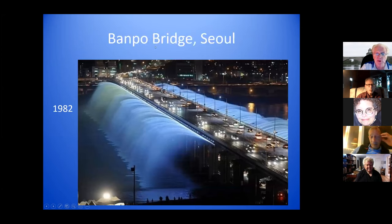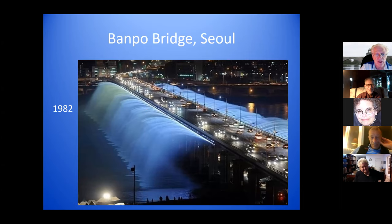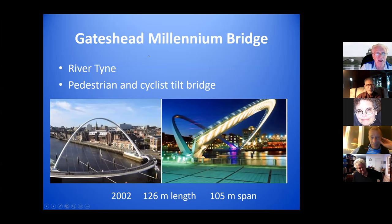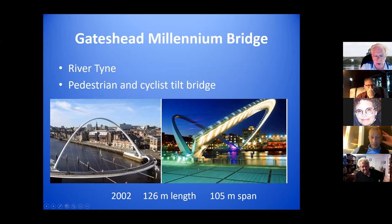This is the Banpo Bridge in Seoul, Korea, built in 1982 — the longest fountain bridge in the world, with three lanes of traffic in each direction. This Millennium Bridge was built in 2002 over the River Tyne — a pedestrian and cyclist bridge. When it's down, people can walk or bike across it, and when they raise it, it raises up so boats can go under both of the arcs.